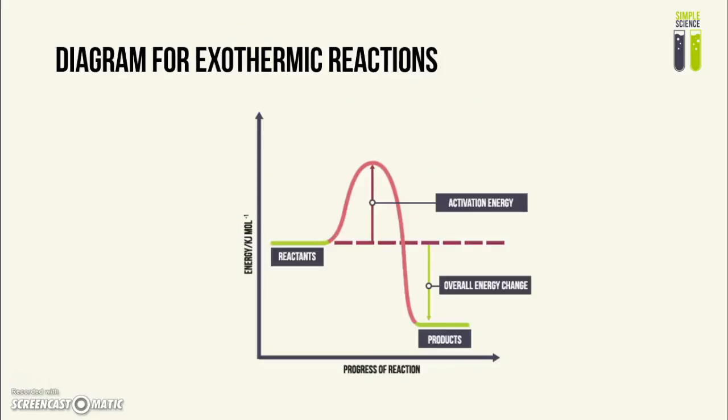After that, you might be asked to draw an energy level diagram. You might be asked to identify it in paper one. This is the energy level diagram for exothermic reactions. As you can see, the reactants have more energy than the products, and this is because energy has been given out to the surroundings, which makes sense.